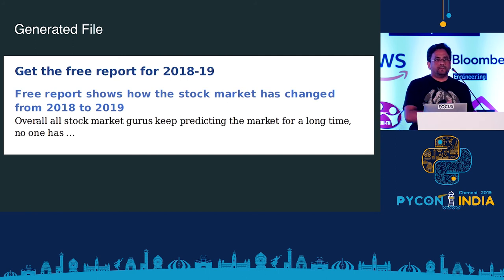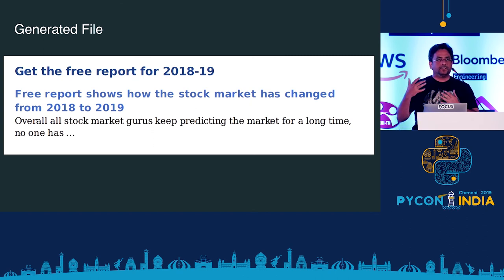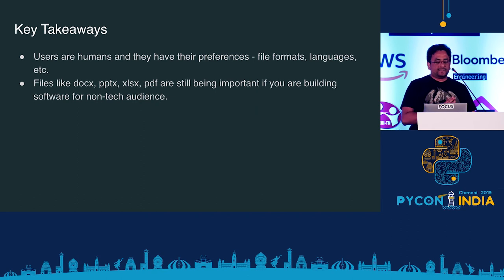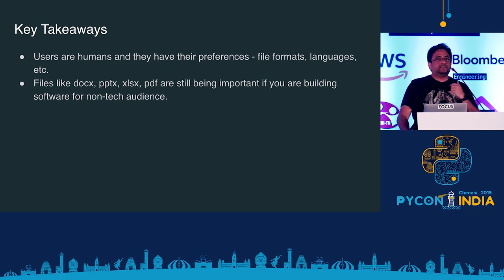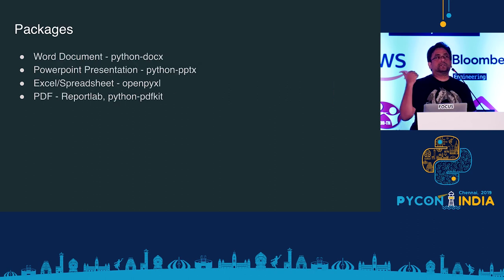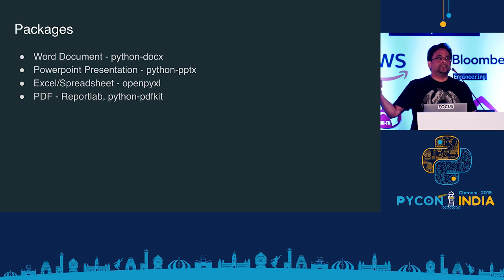This is a screenshot of the same script in use, and this is how it will look in your Word document. Once you show this, it's naturally going to get a positive reaction from the marketing guy. The key lesson here is that users are humans — you need to empathize with them and understand that they have their own preferences, file formats, and tools they like. You can't impose your standards on them. Python makes it easy to create documents like Word, Excel, PowerPoint, and PDFs, and there are packages available for all of these.